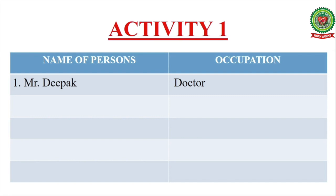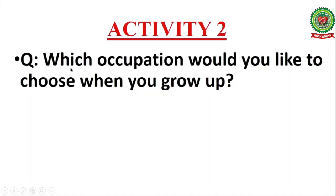Children, in this activity you have to write the name of five persons living in your neighborhood and also write their occupation, as I have done for you. Activity number 2: also answer this question — which occupation would you like to choose when you grow up? I think you have understood the topic discussed today. Your homework is to read page 44, revise terms, and do the questions and given activities. Thank you.